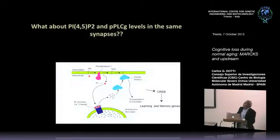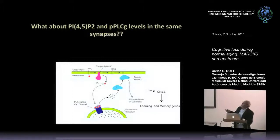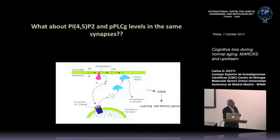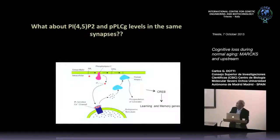This reduction in MARCKS is consistent with the reduction we saw in cholesterol. Since MARCKS is required for clustering of PIP2, and PIP2 is important for the activation of PLCγ, the question is: what are the levels of PIP2 and PLCγ in the same synapses? If we lose MARCKS then we will have less PIP2 clusters, and perhaps more transformation of PIP2 via PI3-kinase into PIP3, and less hydrolysis by PLCγ. Let's see what happens.